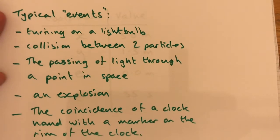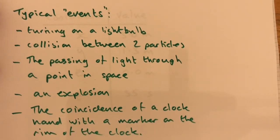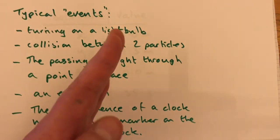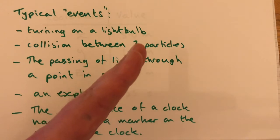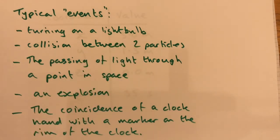Or now this one's quite complicated sounding but it's straightforward: the coincidence of a clock hand with a marker on the brim of a clock. For example, when the second hand passes the three marker, that is an event that we would typically be interested in.